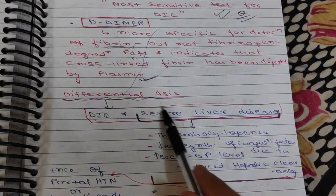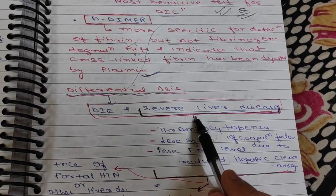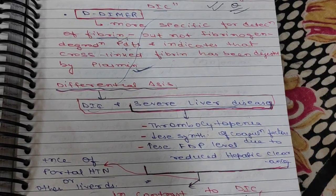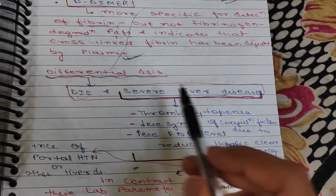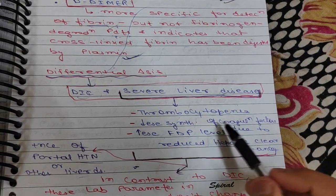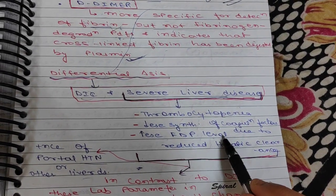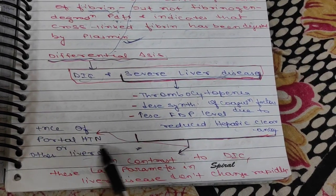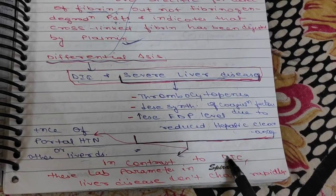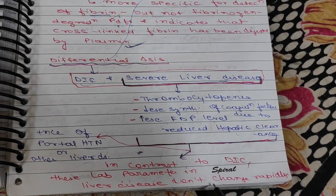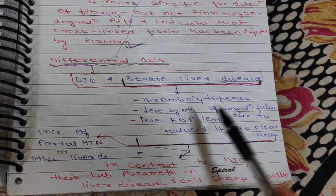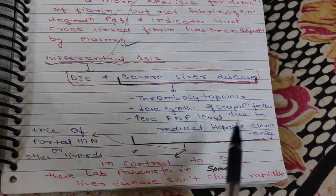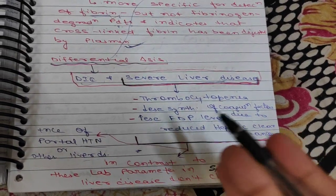For differential diagnosis between DIC and severe liver disease, in liver disease you will encounter thrombocytopenia, decreased synthesis of coagulation factors, and increased FDP level due to reduced hepatic clearance. There may also be presence of portal hypertension or other liver disease. In contrast to DIC, these lab parameters in liver disease don't change rapidly. In DIC, parameters change very rapidly, but in liver disease, these parameters do not change rapidly.